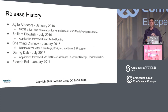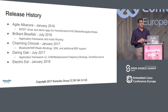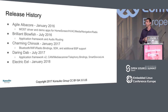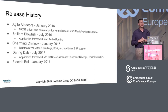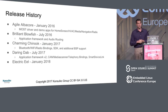Charming Chinook brought in some of the first application framework bindings — actual APIs exposed to application developers in a well-defined way — for Bluetooth, Wi-Fi, and radio. The cross SDK first became available there and a lot of additional BSP support. Moving forward to Daring Dab in July, that brought an enhanced version of the application framework and some additional bindings, plus Smart Device Link — Ford's open-sourced app framework. The next release is Electric Eel, targeted for January 2018, which is what we're working on in mainline and master now.